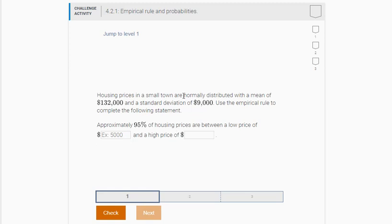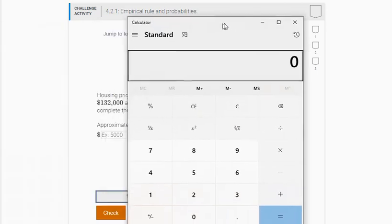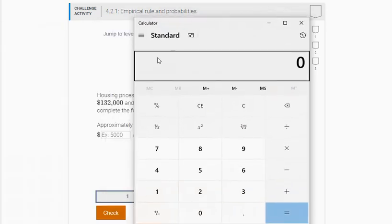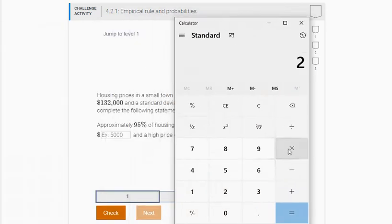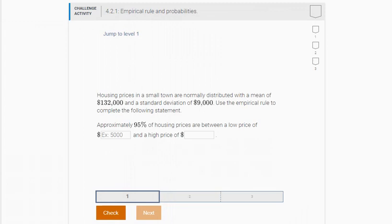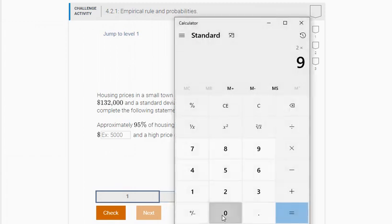So you have to look back in the empirical rule. And what the empirical rule says is that 95% of observations should fall within two standard deviations on either side of the mean. So two standard deviations. You're going to take two and multiply it by your standard deviation. So that would be two times 9,000, which is 18,000.